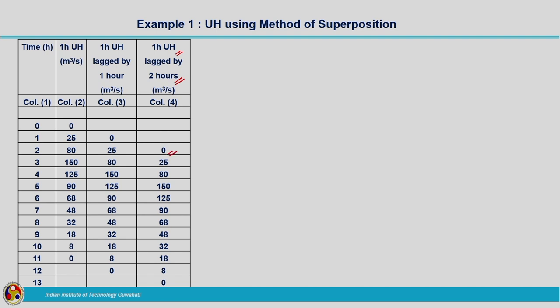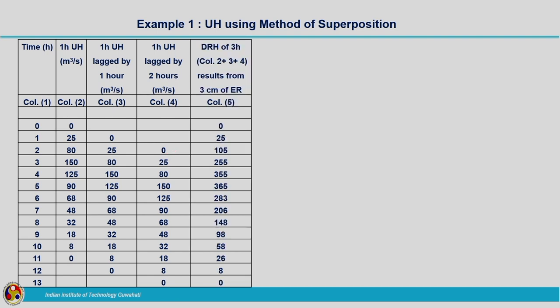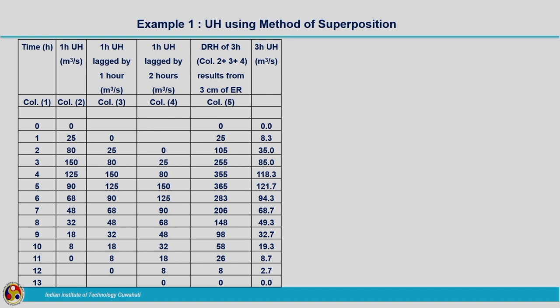After this, we will sum up the ordinates from column 2, column 3, and column 4. That will result in a direct runoff hydrograph of 3 hours, produced due to 3 centimeters of effective rainfall. Then, dividing the ordinates of the direct runoff hydrograph by 3 centimeters will give us the 3-hour unit hydrograph. These are the ordinates of the 3-hour unit hydrograph derived from the 1-hour unit hydrograph.